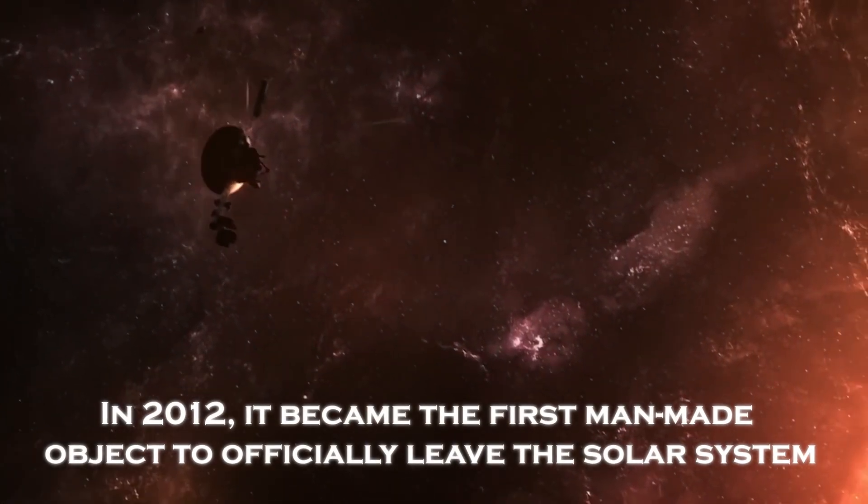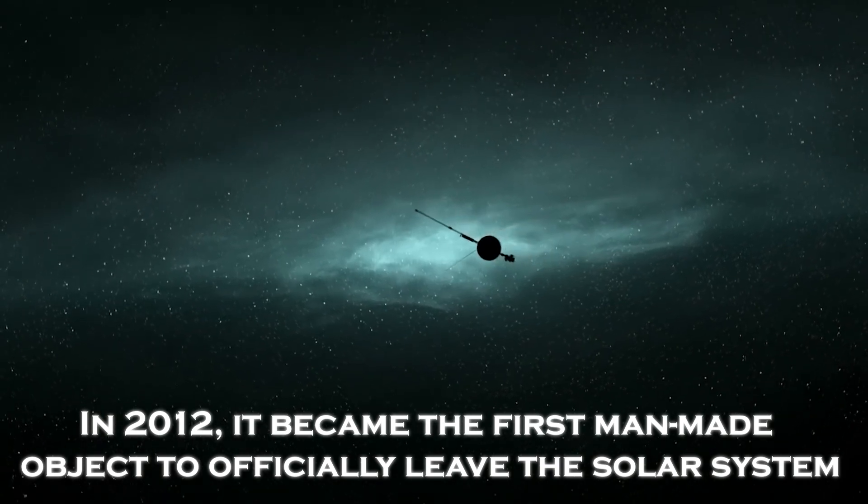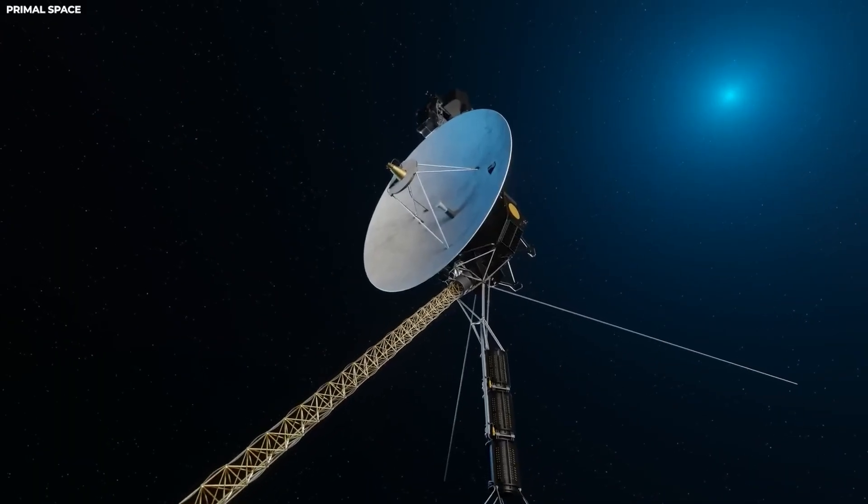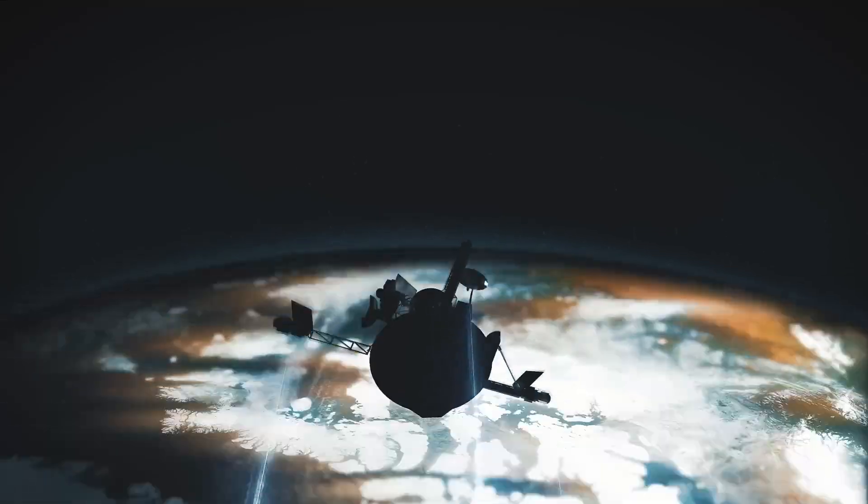In 2012, it became the first man-made object to officially leave the solar system, crossing the Heliopause and entering interstellar space. But now, more than 47 years after its launch, Voyager 1 has surprised us again.